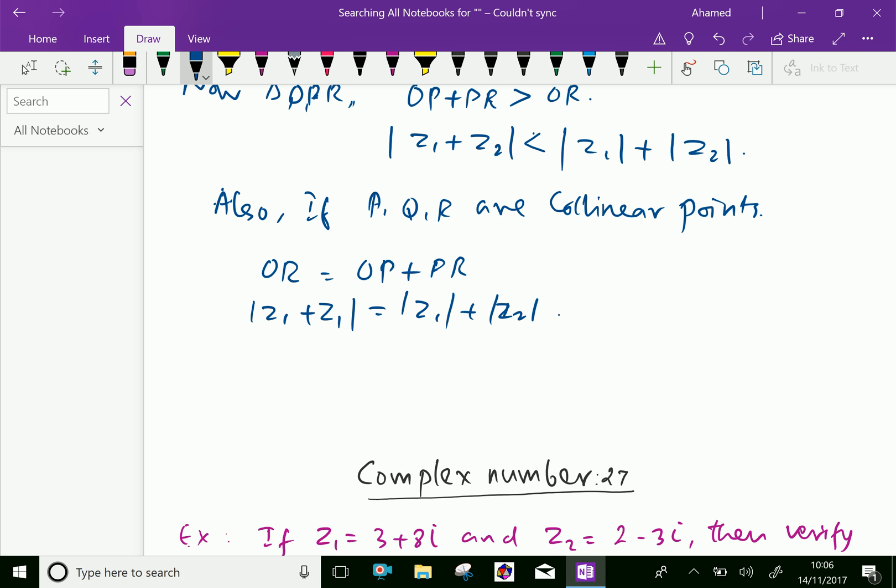Collectively, you can write |z₁ + z₂| ≤ |z₁| + |z₂|. Hence, we proved.